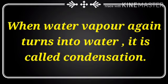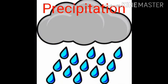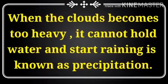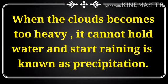And the third step in the water cycle is precipitation. When the clouds become too heavy, they cannot hold water and it starts raining.